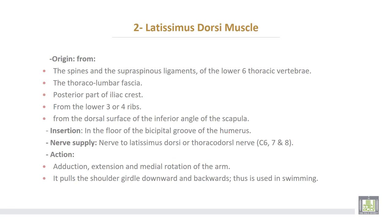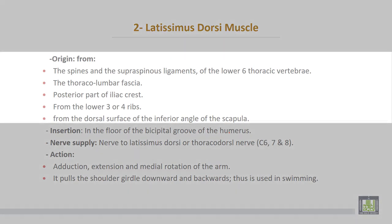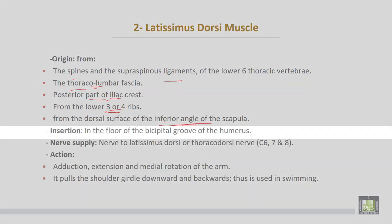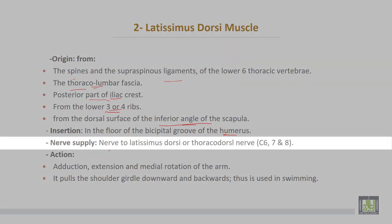The latissimus dorsi muscle takes origin from the spines and supraspinous ligaments of the lower six thoracic vertebrae, also from the thoracolumbar fascia and posterior part of the iliac crest, from the lower three or four ribs, and some fibers from the dorsal surface of the inferior angle of the scapula. It inserts into the floor of the bicipital groove of the humerus. The nerve supply comes from the nerve to latissimus dorsi, also called the thoracodorsal nerve, cervical six, seven, and eight, from the posterior cord of the brachial plexus.